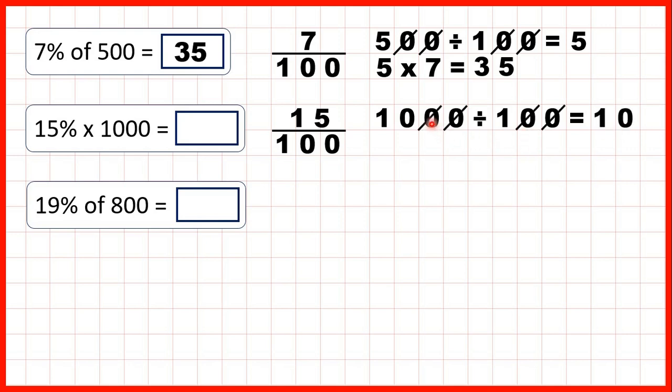Because again we can cancel the two end zeros in the division question, and then 10 divided by 1 is 10. So now we can take that answer, take that 10, and multiply it by the numerator, so work out 10 times 15. That's 150, so 15% times 1000 is 150.